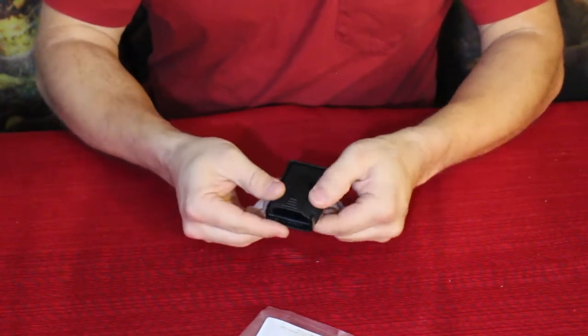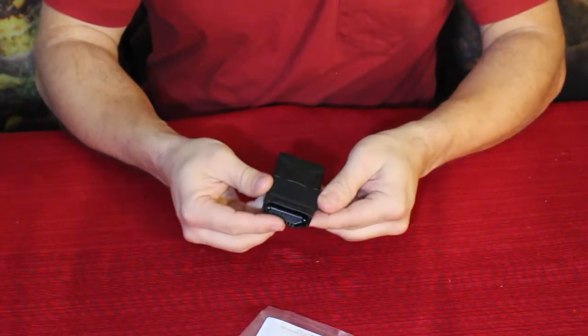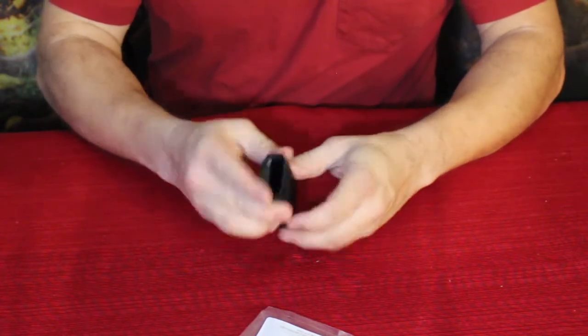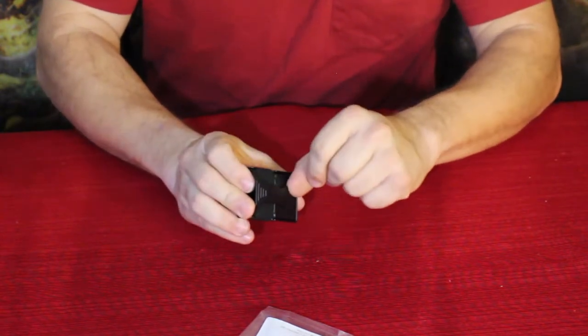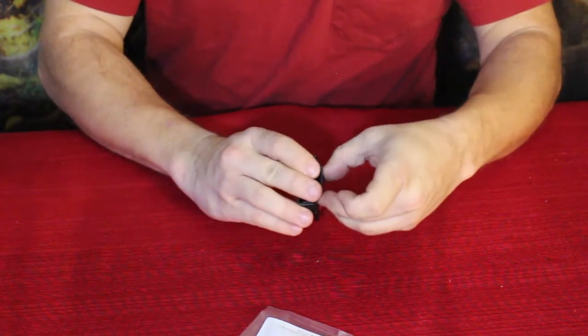We have kind of a rubber piece here. I'm not sure exactly what that's for. And then we have a belt clip right here, a simple plastic belt clip.